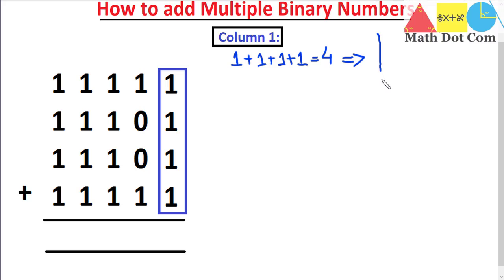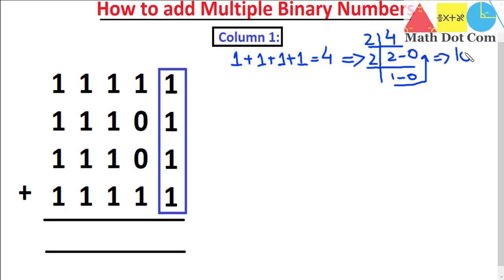We have to divide it by two, since binary uses base two. Two twos are four, remainder is zero. Then two ones are two, remainder is zero. So we get the combination of ones and zeros as one zero zero. The binary equivalent of four is 100.